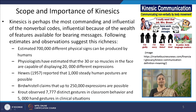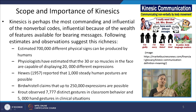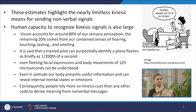Physiologists have estimated that there are about 30 muscles in the face capable of displaying almost 20,000 different expressions. Hughes reported that 1000 steady human postures are possible. Birdwhistell claimed that up to 250,000 expressions are possible. Kaut observed almost 8000 distinct gestures in classroom behaviour and 5000 hand gestures in critical situations. These estimates highlight the nearly limitless kinesic means for sending non-verbal signals, and if the capacity to send innumerable kinesic signals exists, our capacity to recognize them is also potentially immense.